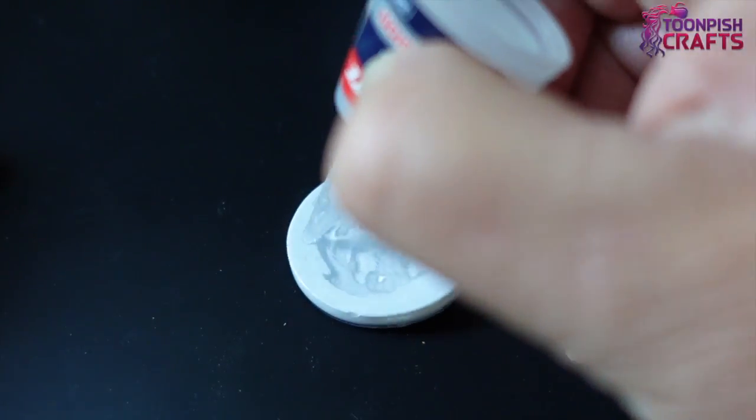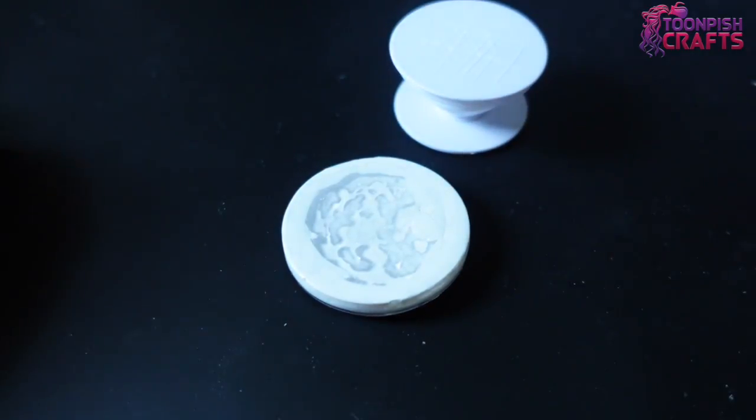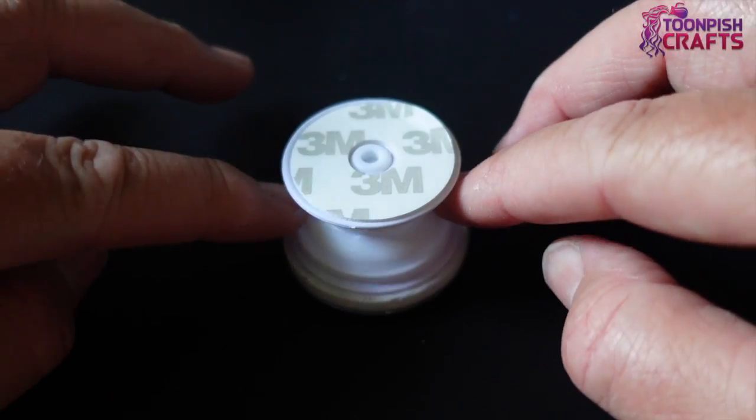I then scratched up the back so that I could stick it to a scratched up thumb grip and stuck it with super glue, making sure it was in the center.